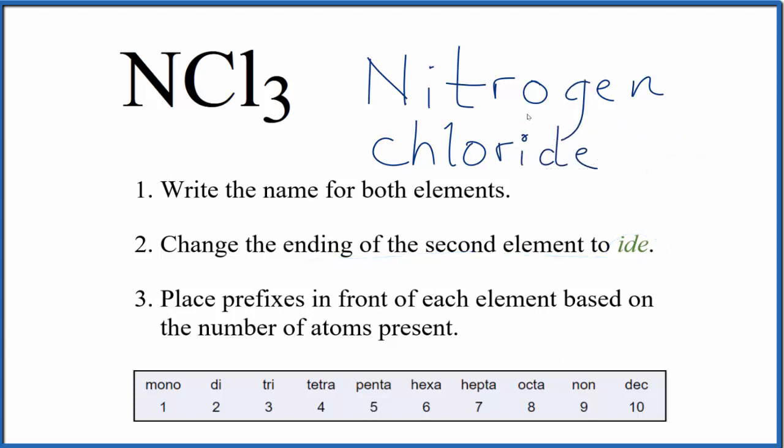At this point, we have nitrogen chloride. Now we'll use prefixes and put those in front of each element based on how many atoms are present. For nitrogen, we only have one, and since nitrogen is the first name, we don't do anything. We just leave it as nitrogen.